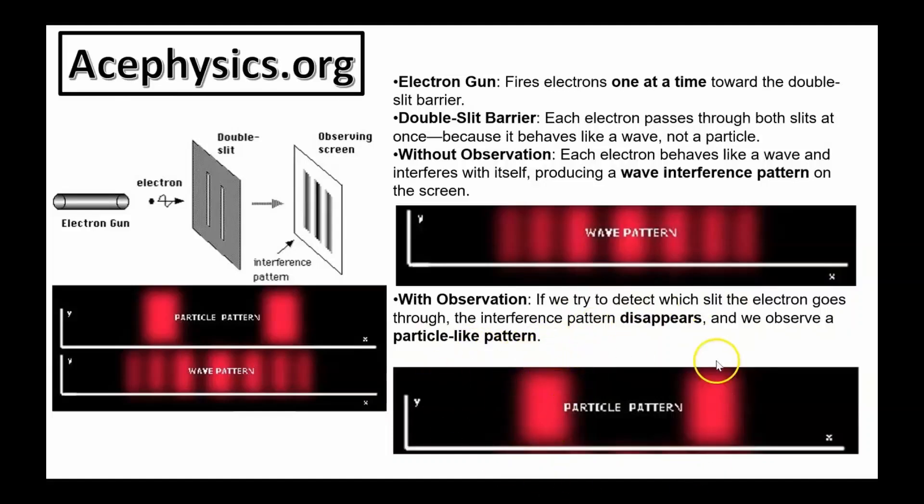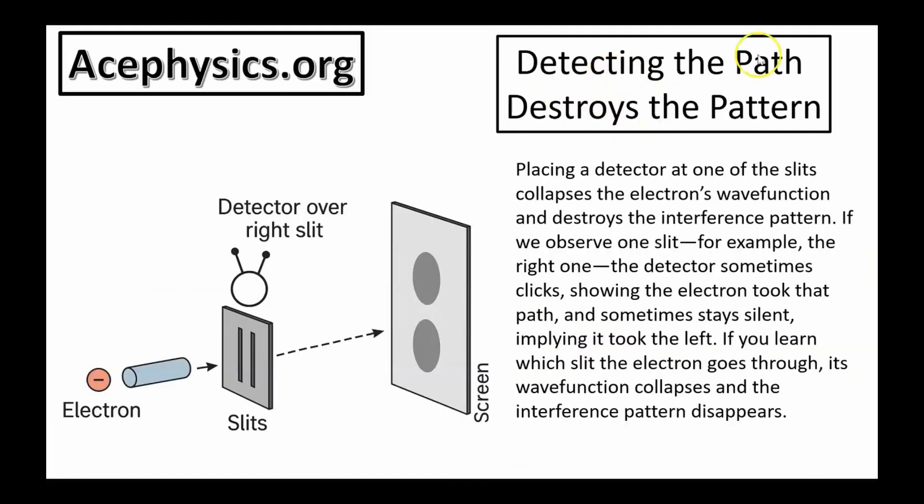With observation, there's just two bright spots, and these bright spots are in line with the two slits. Detecting the path destroys the pattern. Placing a detector at one of the slits collapses the electron's wave function and destroys the interference pattern. If you learn which slit the electron goes through, its wave function collapses and the interference pattern disappears.